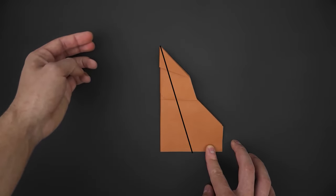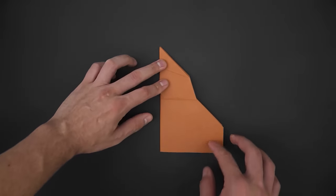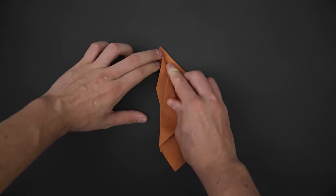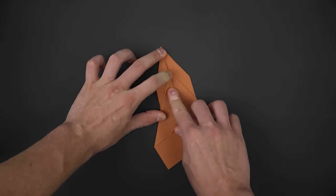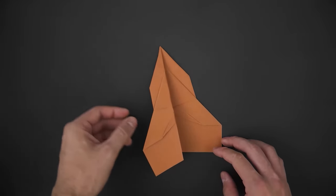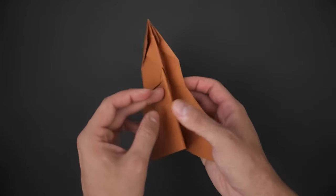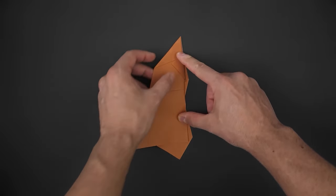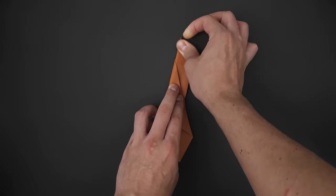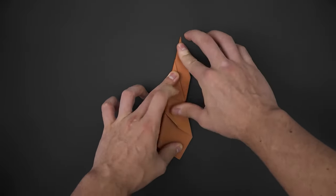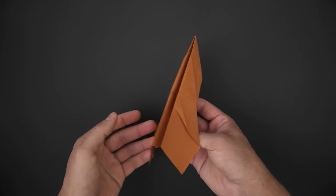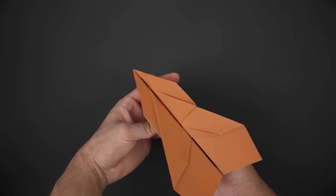And then fold the diagonal to make the first wing. And then fold the diagonal to make the second wing.